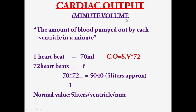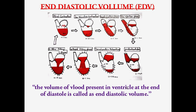The next topic is cardiac output, also called minute volume. It is the amount of blood pumped out by each ventricle in a minute. We know stroke volume is 70 ml per beat. To get cardiac output, we multiply stroke volume by the normal heart rate of 72 beats per minute, which gives 5040 ml — approximately 5 liters. So cardiac output is 5 liters per ventricle per minute. Be very careful about the units you write. Cardiac output is also called minute volume because we are calculating stroke volume per minute.